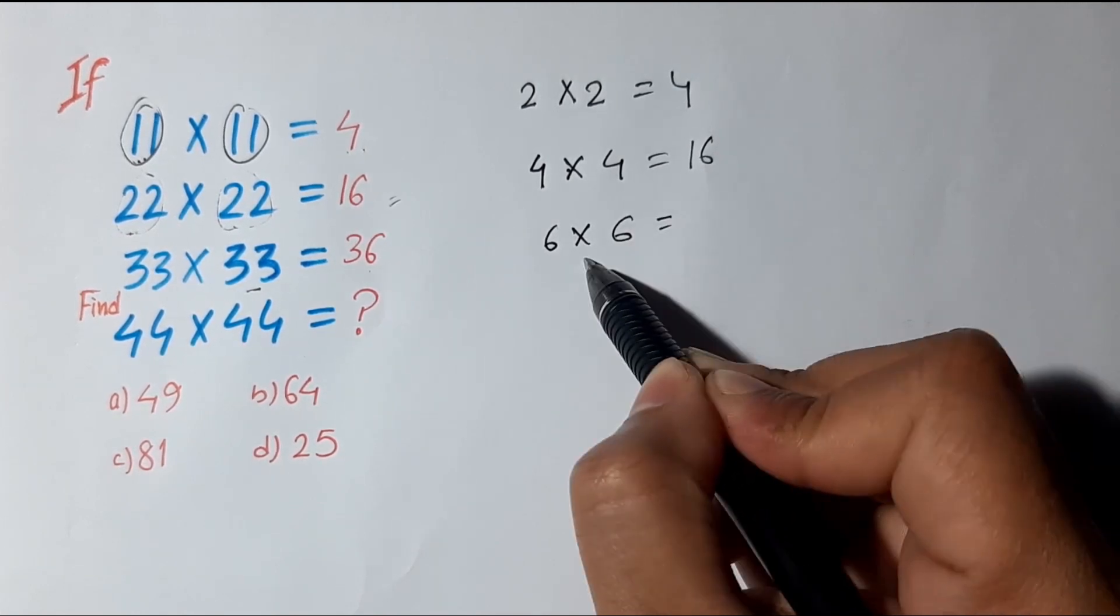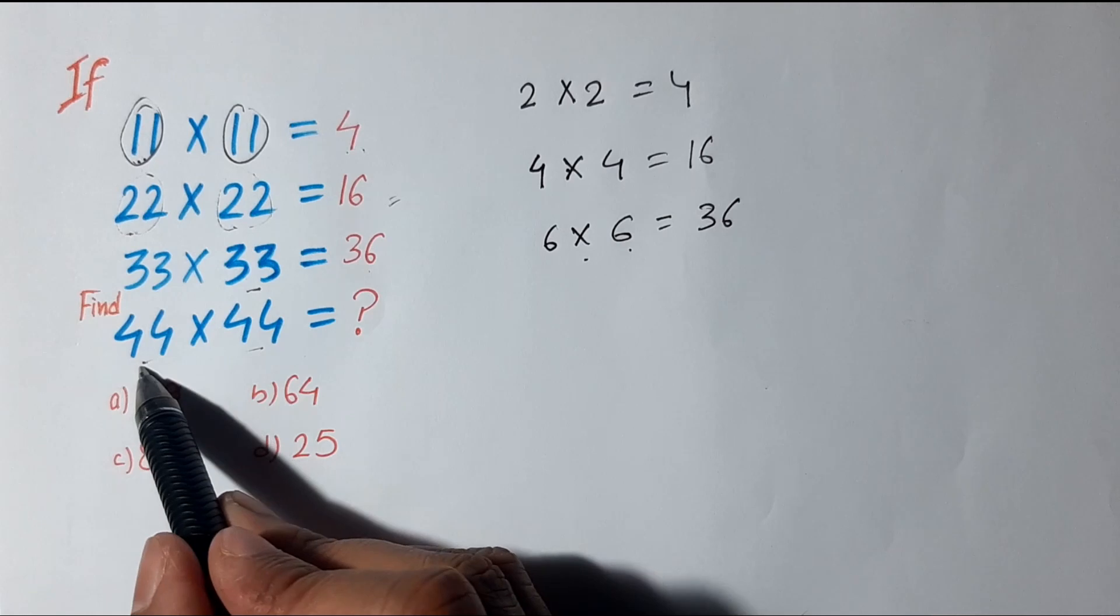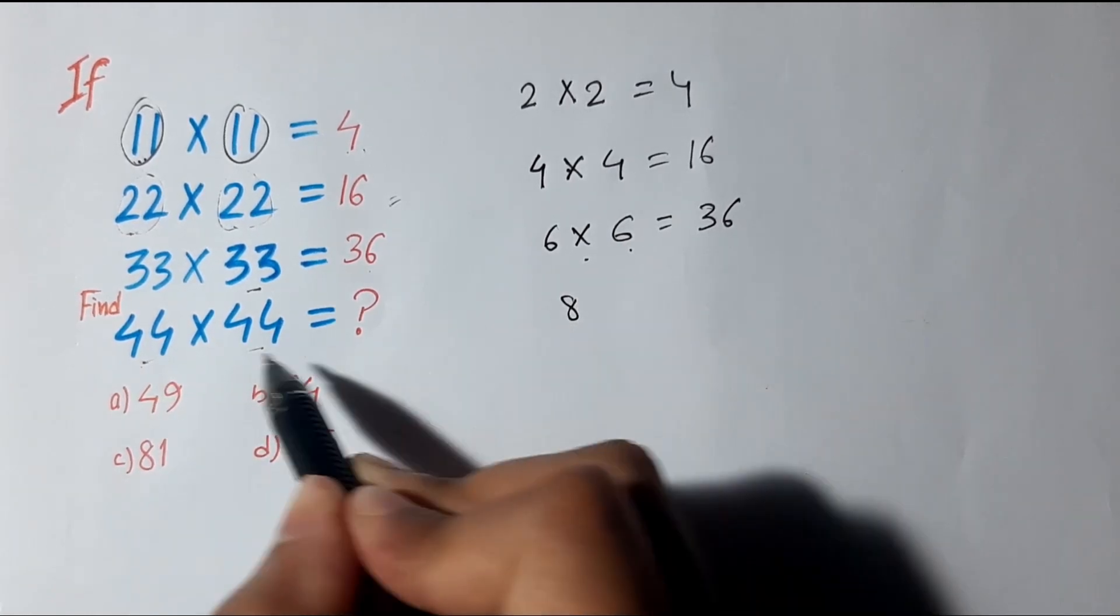For 33×33, 3+3 = 6, and again 3+3 = 6, and 6×6 = 36.